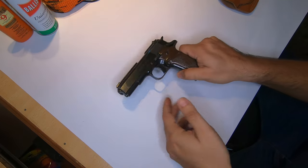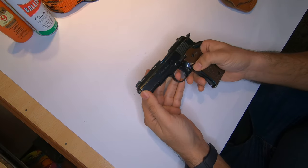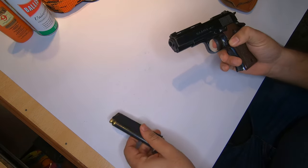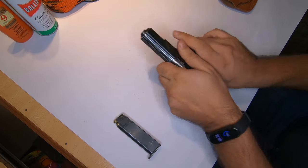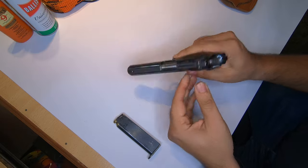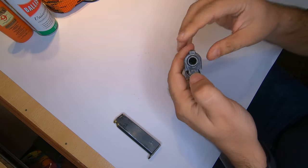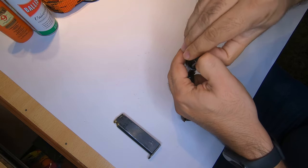Hi, today I'll show you how to assemble and disassemble the Llama. It's a .32 caliber. First of all, we remove the magazine, then we'll check if there's a bullet in the chamber or not. Then we'll press this and turn this lock to the left.